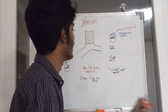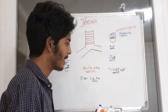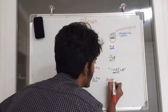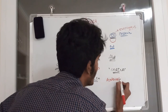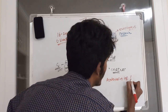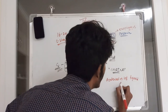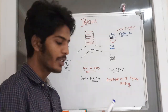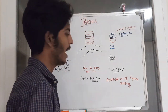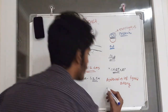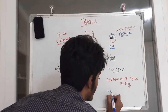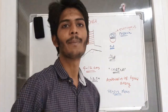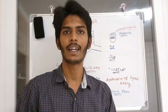The venous drainage of the trachea is into the venous plexus surrounding the trachea. The arterial supply is mainly by the inferior thyroid artery. The trachea also has both sympathetic and parasympathetic innervation.